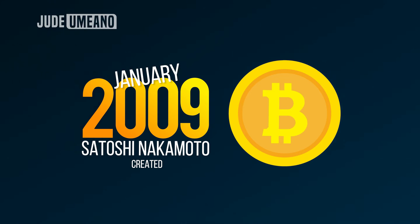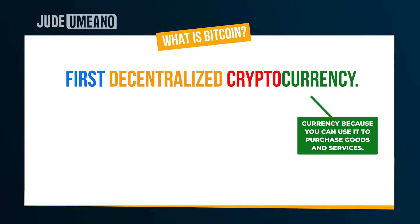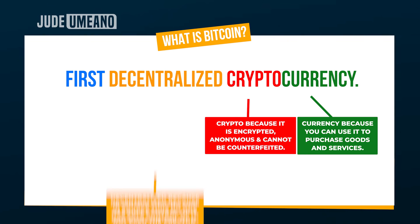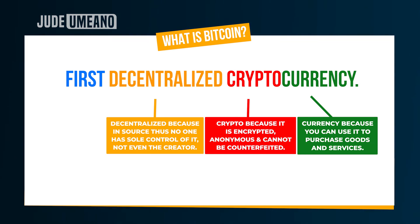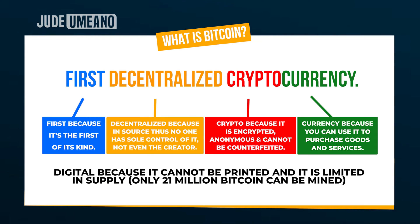Bitcoin is the first decentralized cryptocurrency. It's a currency because we can use it to buy goods and services. It is crypto because it is encrypted, anonymous, and cannot be counterfeited. Decentralized because it is open source, so no one has sole control of it — not even the creator. It is also digital because it cannot be printed, and it is limited in supply: only 21 million bitcoins can ever be mined. Bitcoin is possible because of blockchain technology.